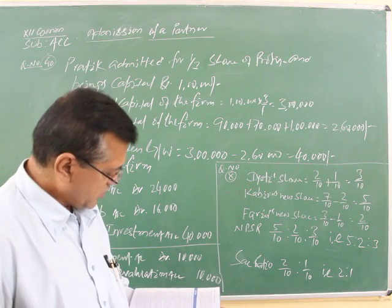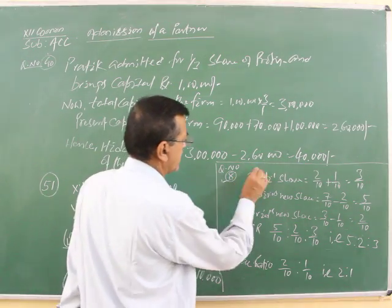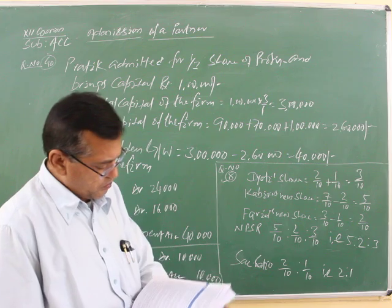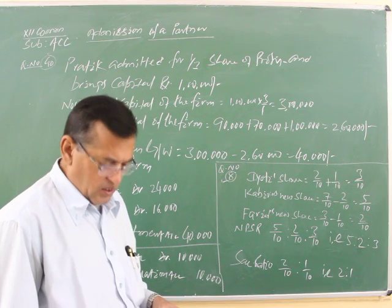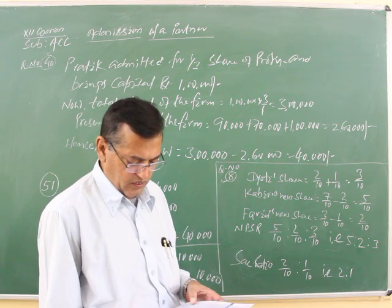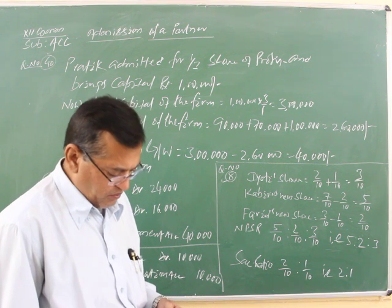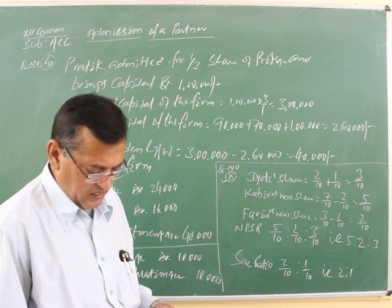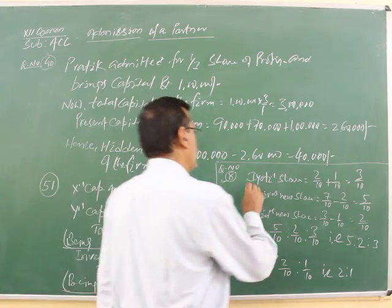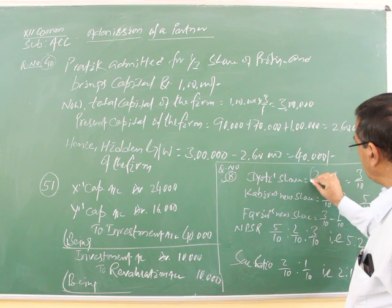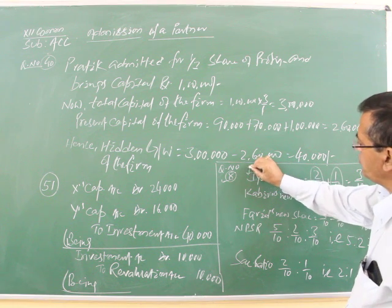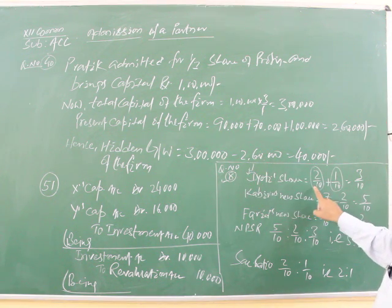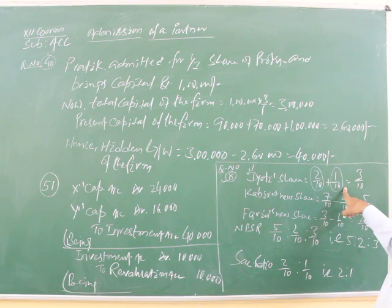In the Admission section, I have taken question number 8. Under this question there are two partners: Kabir and Farid, and their profit sharing ratio is 7 is to 3. Kabir surrendered 2 by 10 from his share and Farid surrendered 1 by 10 from his share in favor of Jehuti. So Jehuti's share is 2 by 10 plus 1 by 10, which equals 3 by 10.